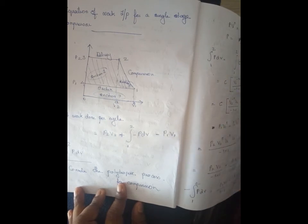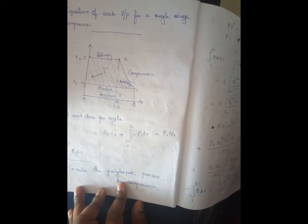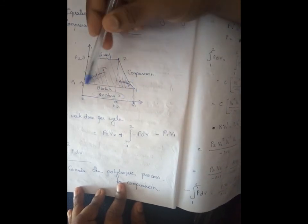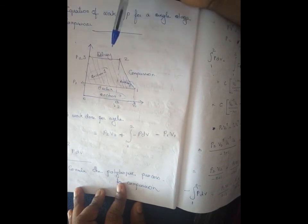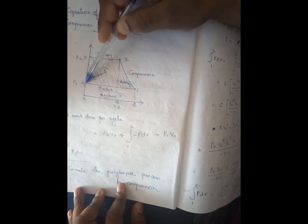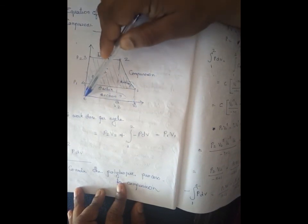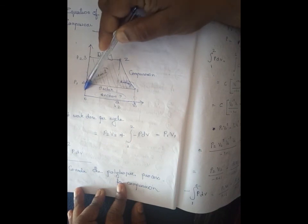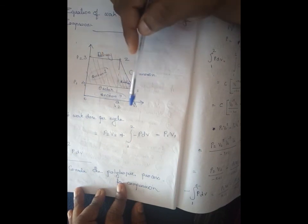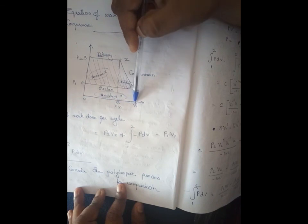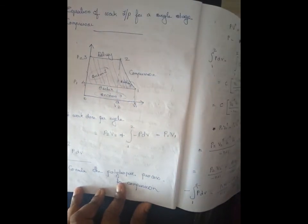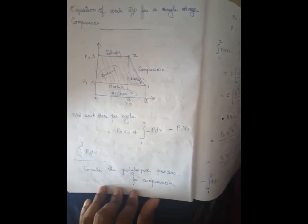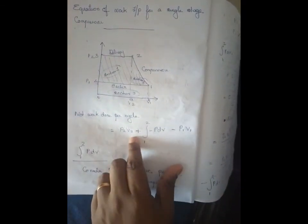The work expression becomes: Section 1 plus Section 2 minus integral PDV minus Section 3. Section 3 is a rectangle with area P1 into V1. The dimension is 0 to P1 and 0 to V1, giving P1V1.